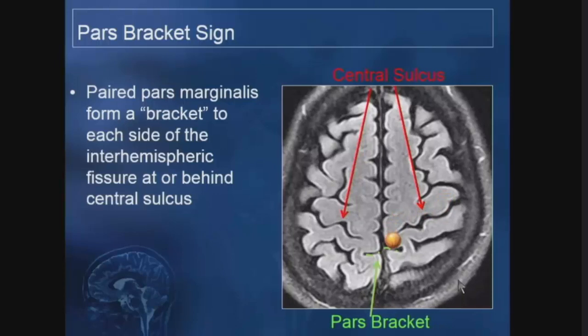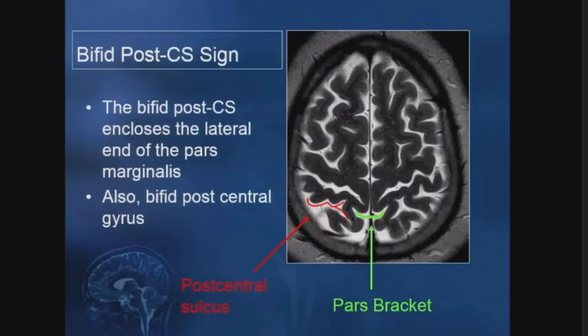The sub-central gyrus connects the pre- and post-central gyrus inferiorly — called the U sign since it looks like a U. Literature describes this as one of the most reliable signs for finding the central sulcus, though more recently described. The M sign is along the inferior frontal gyrus, forming a nice M shape. It has three parts: the pars orbitalis, pars triangularis, and pars opercularis. The latter two parts are involved in speech — this is where Broca's area is located.